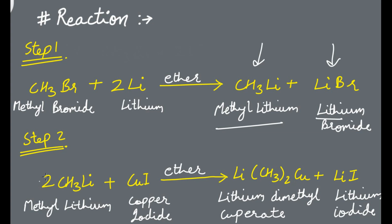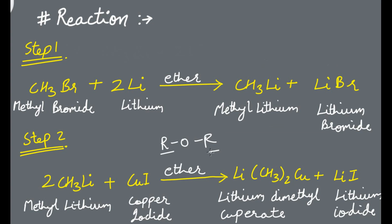Now we take this alkyl lithium — in this case, methyl lithium. Methyl lithium is then treated with copper iodide in the presence of dry ether. Dry ether has the general formula R-O-R, where R is an alkyl group, and 'dry' means there is no water molecule present, since ether has the tendency to absorb moisture. When methyl lithium is treated with copper iodide, lithium dimethyl cuprate is formed, and another byproduct, lithium iodide, is also produced.